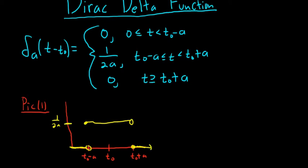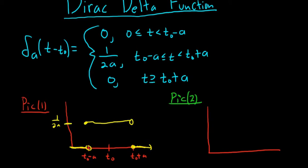Now we're going to look at the second picture — pick 2. In pick 2 we have to use our imagination a little bit. There's the y-axis and the x-axis. We are going to let a approach 0. So as a approaches 0, the point t₀ minus a is moving toward t₀ and the point t₀ plus a is also moving toward t₀. And the height is 1 over 2a.